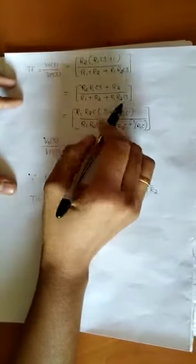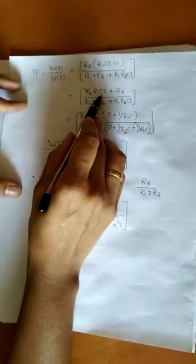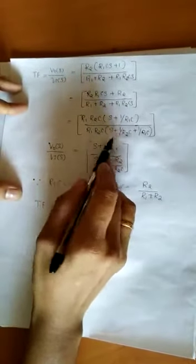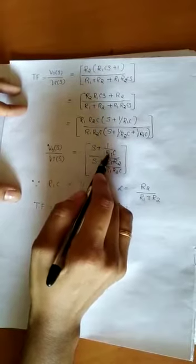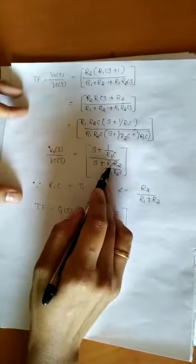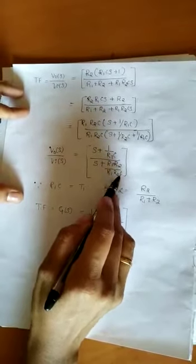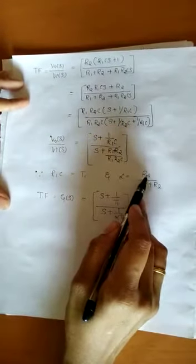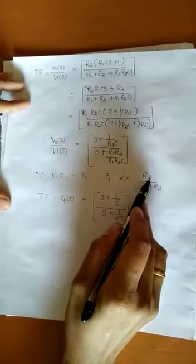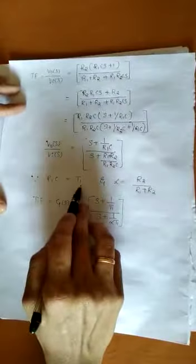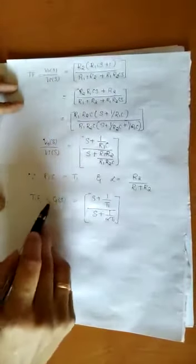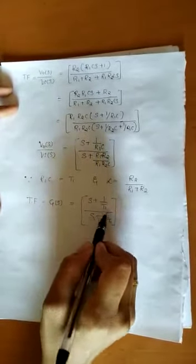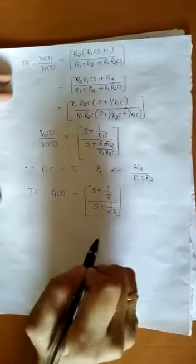Further simplifying, in the numerator and denominator we take R2, R1, C as common. The equation becomes (S + 1/(R1·C)) / (S + (R1 + R2)/(R1·R2·C)). Now let T1 = R1·C, and alpha (α) = R2/(R1 + R2). Substituting T1 and α, the final standard transfer function for a lead compensating network is: (S + 1/T1) / (S + 1/(α·T1)).